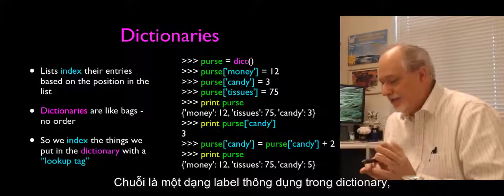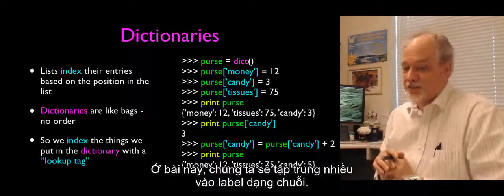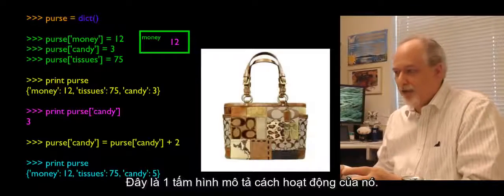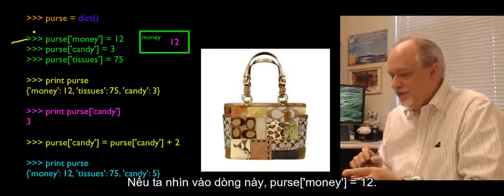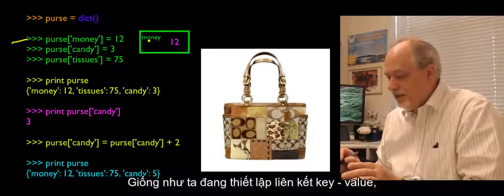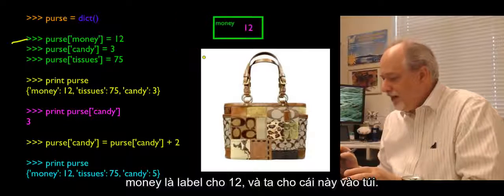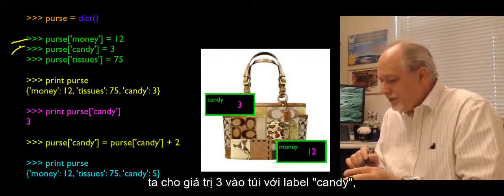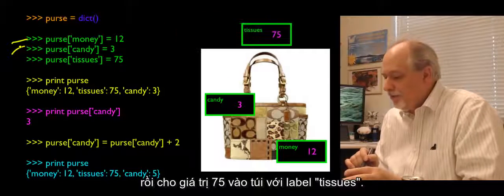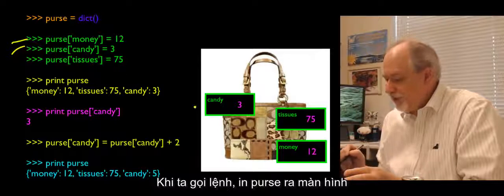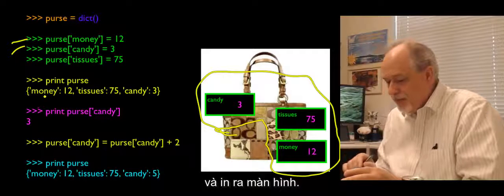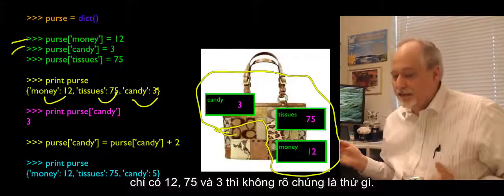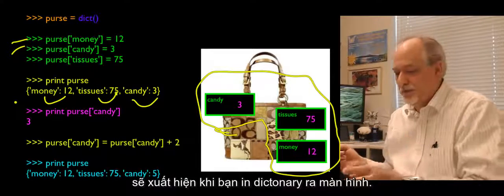Here's a picture of how this works. Purse sub money equals 12 — it's like we're putting a key-value connection; 'money' is the label for 12. Then we put 3 in with the label 'candy,' and 75 in with the label 'tissues.' When we print the purse out, it pulls these things back and hands them to us — both the label and the value. This syntax with curly braces is what happens when you print a dictionary out.